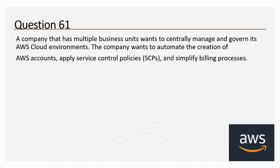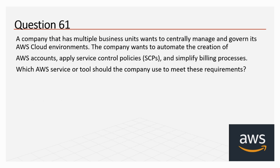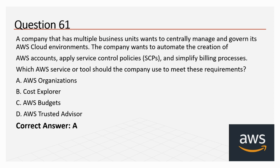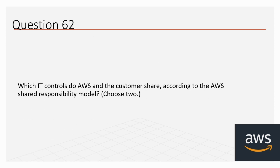Question 61: A company that has multiple business units wants to centrally manage and govern its AWS Cloud environments. The company wants to automate the creation of AWS accounts, apply service control policies, and simplify the billing process. Which AWS service or tool should the company use? Options: AWS Organizations, AWS Cost Explorer, AWS Budgets, and AWS Trusted Advisor. The correct answer is AWS Organizations.